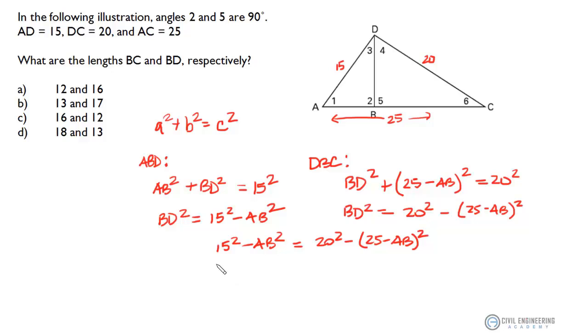Again we're trying to solve for AB. We should develop this term right here. In the next step we should be at 15 squared minus AB squared equals 20 squared minus 25 squared minus 50AB plus AB squared. So all that should reduce down to AB equals 15 squared minus 20 squared plus 25 squared divided by 50.